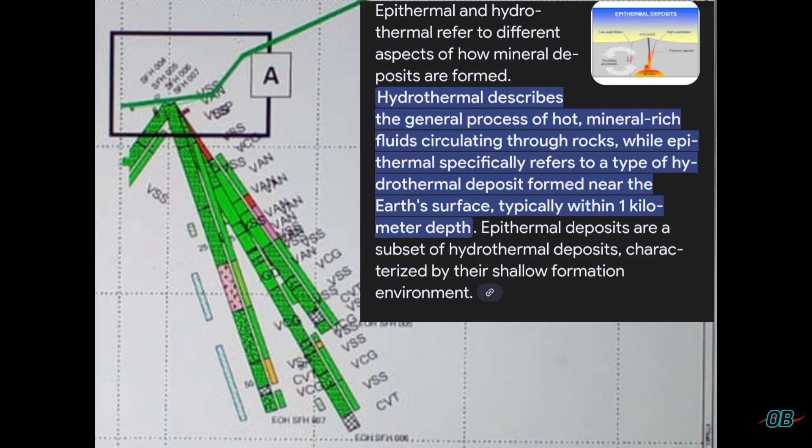Epithermal and hydrothermal describes the general process of hot, mineral-rich fluids circulating through rocks, while epithermal specifically refers to a type of hydrothermal deposit formed near the Earth's surface, typically within one kilometer depth.